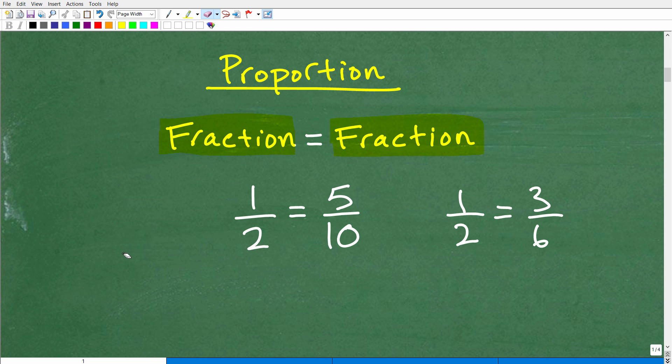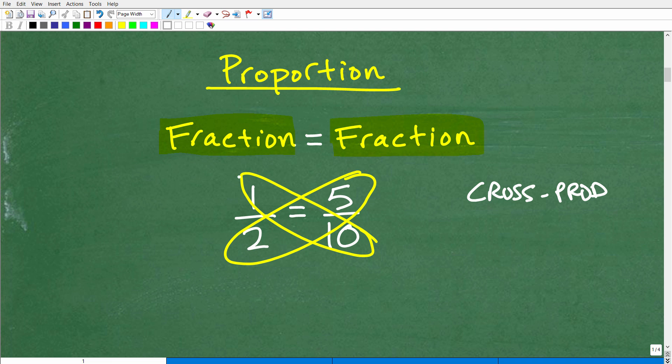The main thing you need to know about proportions is there's a property called the cross product. The cross product is super important. Basically, if we multiply crosswise - two times five equals this cross product, one times ten. So two times five is ten, one times ten is ten. When it comes to a proportion, the cross product is true.